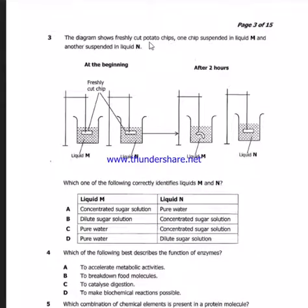Question 3 says: the diagram shows fresh cut potato chips, one chip suspended in liquid M and another suspended in liquid N, at the beginning and after 2 hours. Which one of the following correctly identifies liquids M and N? Look at M and look at N. Now look at the structure of the potato in M. It has shrunk, it has decreased in size. Since it has decreased in size, that means it was losing water into the solution. So water was going into the solution. That means the solution M is more concentrated, and N, you can see that the potato has remained constant, the same shape. So it's pure water. And the answer is A.